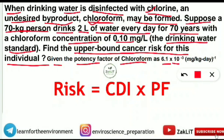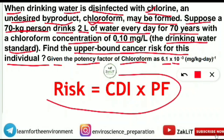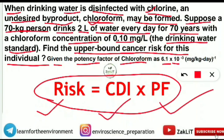We should know the key formula: Risk = CDI × PF. To find the risk factor, we need the Chronic Daily Intake (CDI) — how much of the compound a person is ingesting daily — and PF, the potency factor for that chemical. Using this formula along with the given potency factor and details, we can solve this question simply and get full marks.